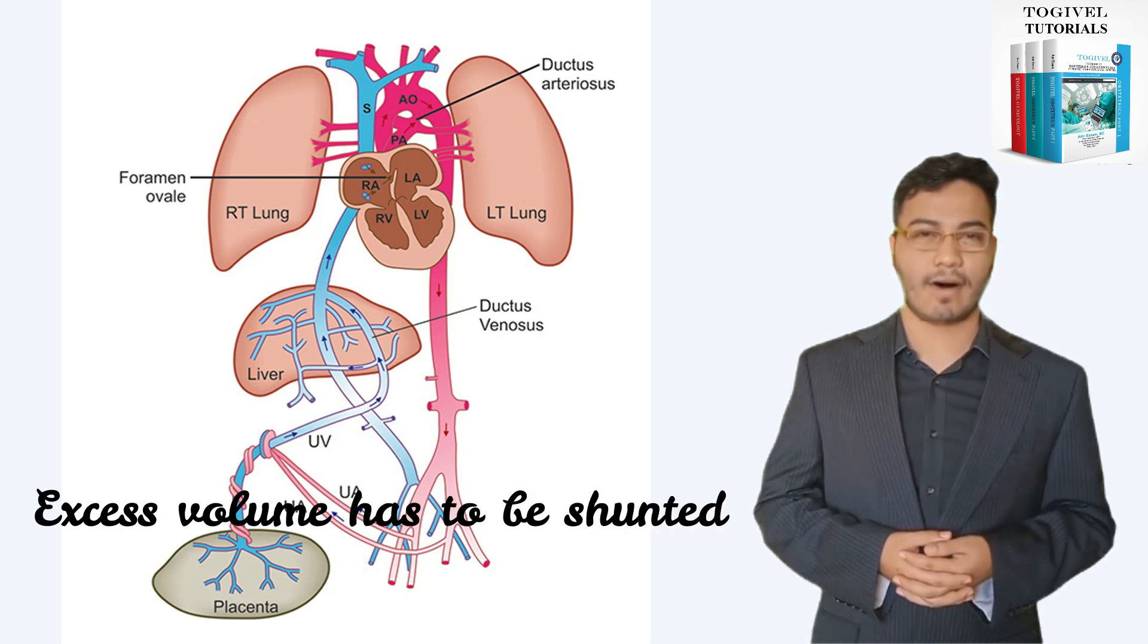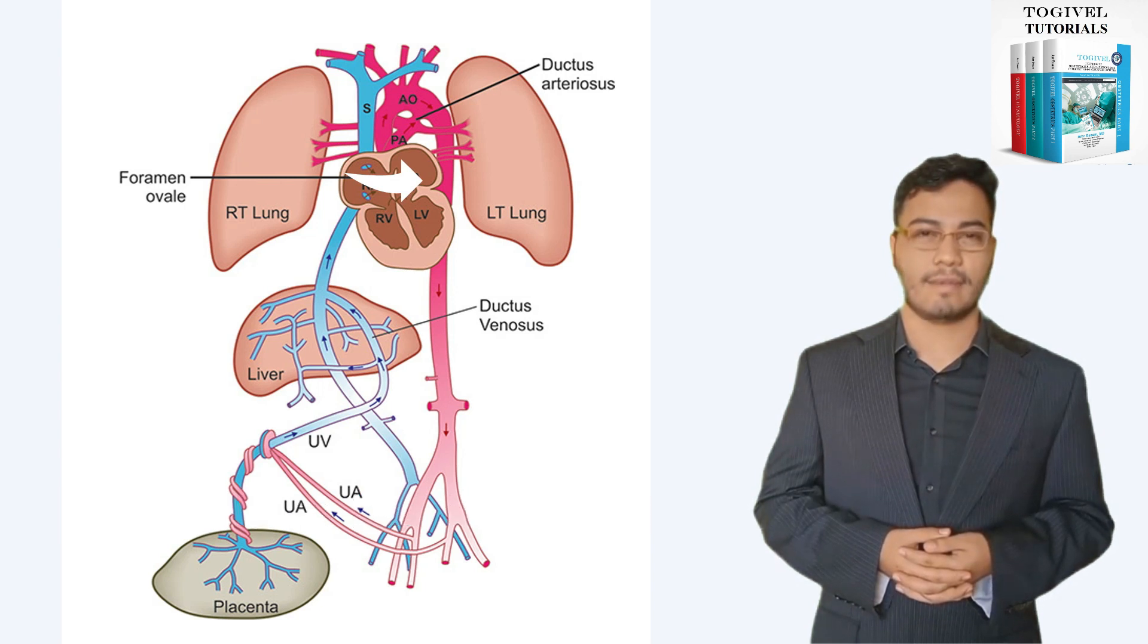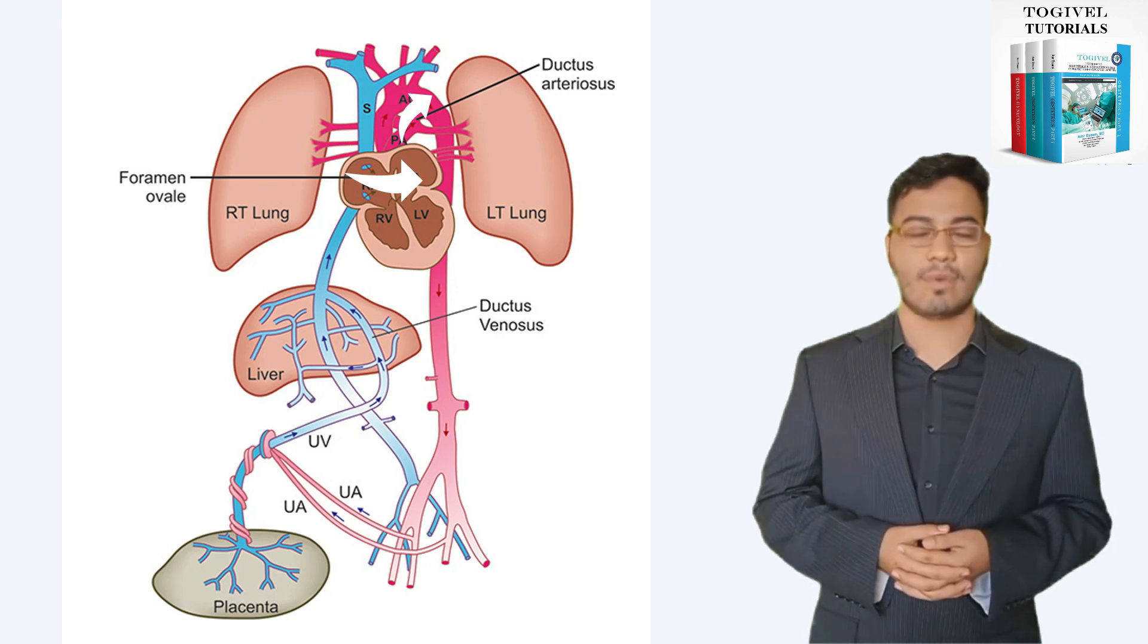Thus, blood from the right side of the heart should be shunted directly to the left side, bypassing the lung. Shunting from the right side of the circulation to the left side occurs at two points: through the foramen ovale, and at a more distal point, through the ductus arteriosus.